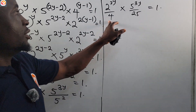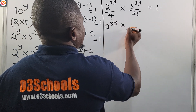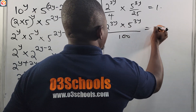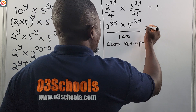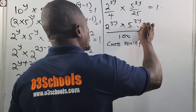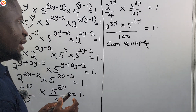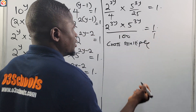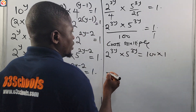Multiplying the denominators: 4 times 25 is 100. So we have 2 raised to power 3y times 5 raised to power 3y, all over 100, equals 1. Now cross-multiply — especially for WAEC students, please write out the cross-multiplication step clearly so the examiner fully understands what you are doing. So: 2 raised to power 3y times 5 raised to power 3y equals 100 times 1, which is 100.